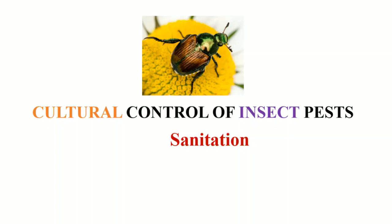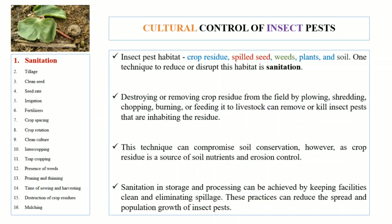In this video series we will discuss the cultural control of insect pests, and in today's video we will specifically talk about the method of sanitation. First, we need to know about insect pest habitats. Insect pest habitats include crop residue, spilled seed, weeds, plants, and soil. If we disrupt or reduce these insect pest habitats, this process is known as sanitation.